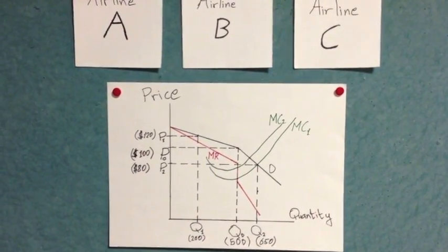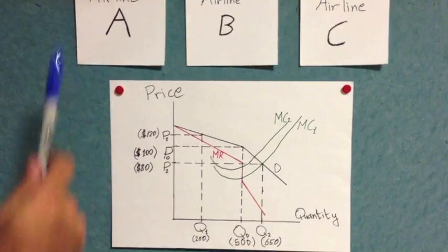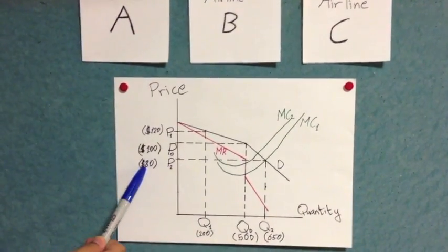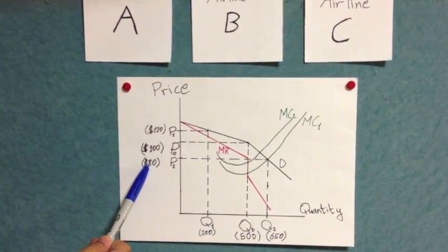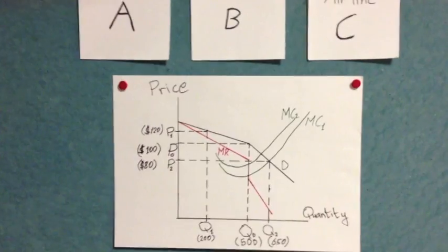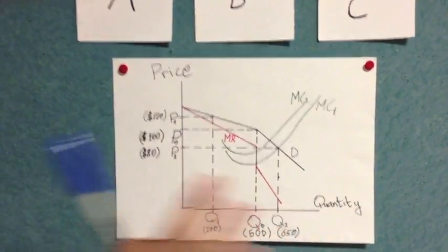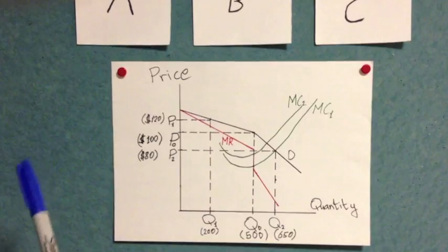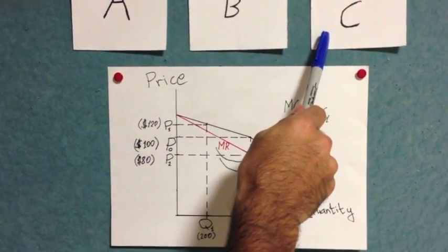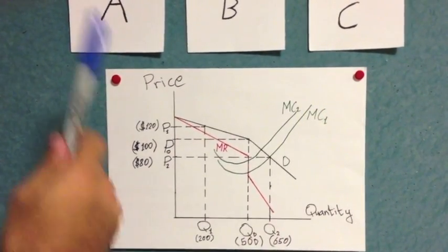In another scenario, let's assume Airline A decides to lower its price down to $80. They've done this to try and attract more customers. Because this is an interdependent market where all the airlines monitor each other very closely, it wouldn't take Airlines B and C very long to find out about Airline A's price cut.